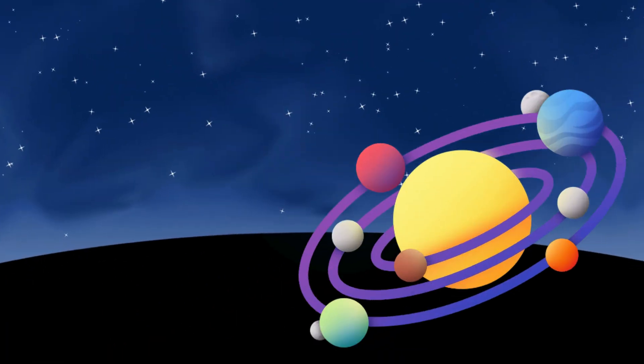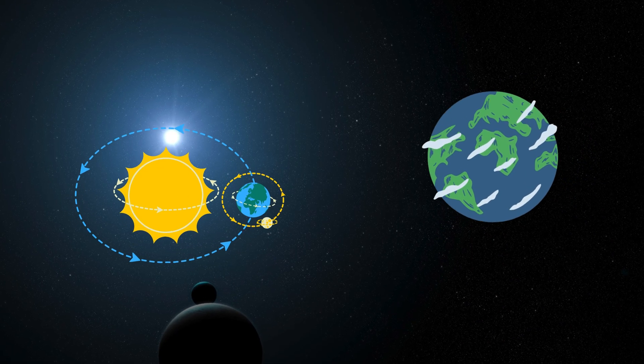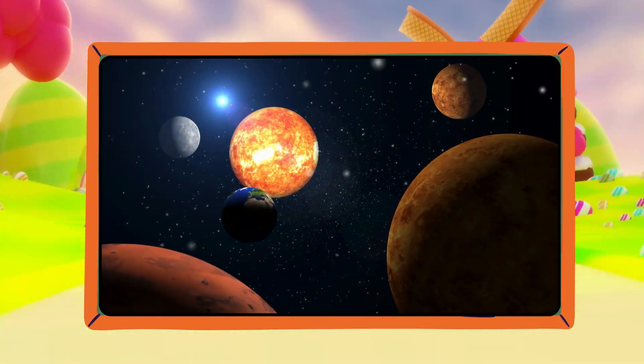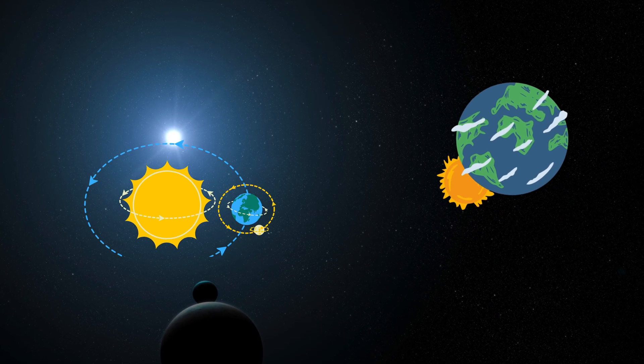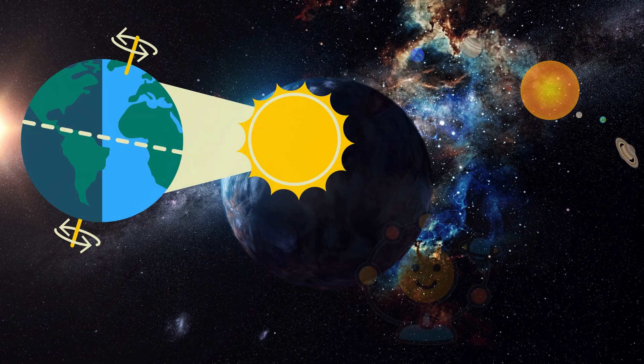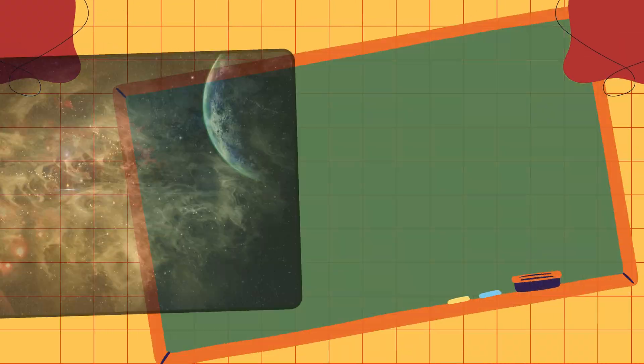O is for orbit. Planets orbit the sun like runners on a racetrack. P is for Pluto. Pluto is small but still proud to be part of space.